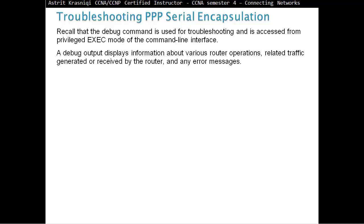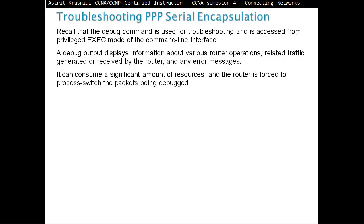A debug output displays information about various router operations, related traffic generated or received by the router, and any other error messages. It can consume a significant amount of resources, and the router is forced to process-switch the packets being debugged.